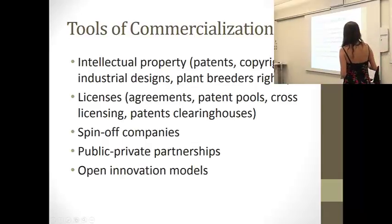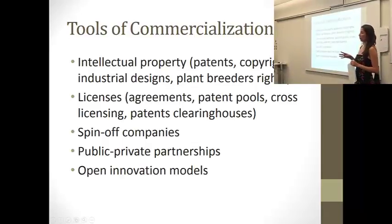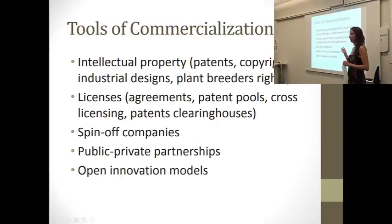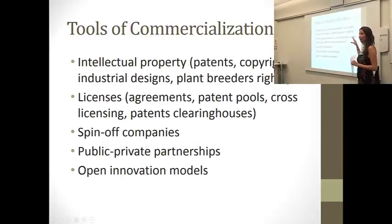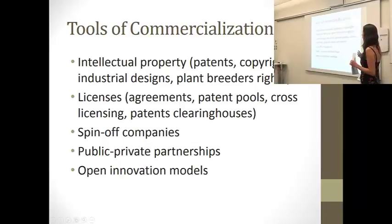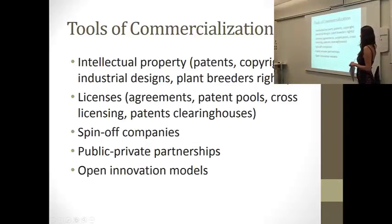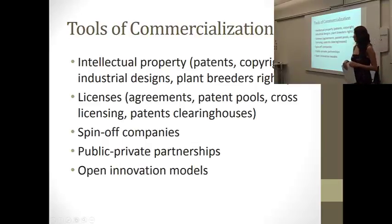The tools of commercialization start with intellectual property rights. There are different types: patents, copyright, industrial design, and plant breeder's rights. Once we get intellectual property rights, we need to use them in ways that make economic sense — through licenses, patent pools, cross-licensing, patent clearinghouses, spin-off companies, public-private partnerships, or open innovation models.